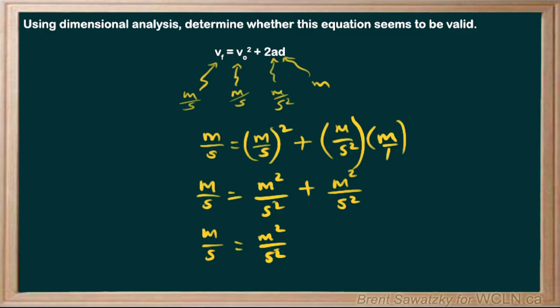Now it's time to look across the equal sign and see if this makes sense. Is meters per second the same as meters squared per second squared? No. So that is not equal. And we can say that seems to us to make this equation invalid. Now, we look at that and we say there's something wrong with that equation. And there is indeed.